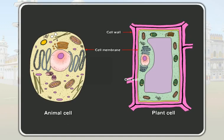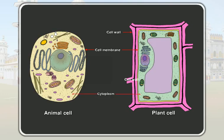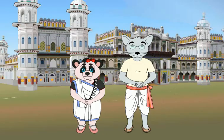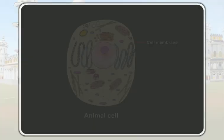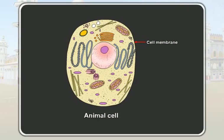The protoplasm has two parts: cytoplasm and the nucleus. Students, let us observe the animal cell again. We can see a centrally located spherical structure. This is a nucleus.